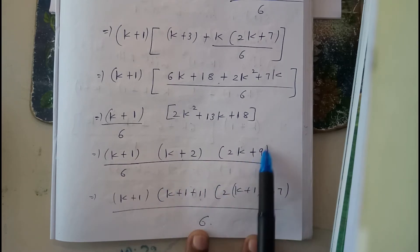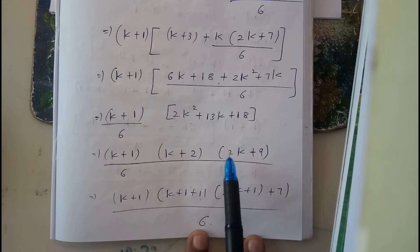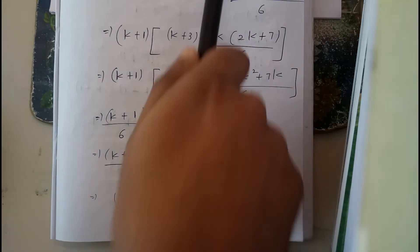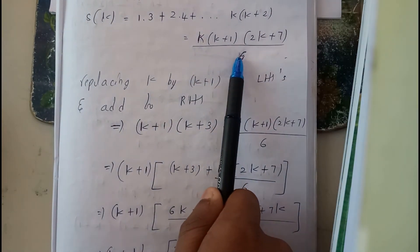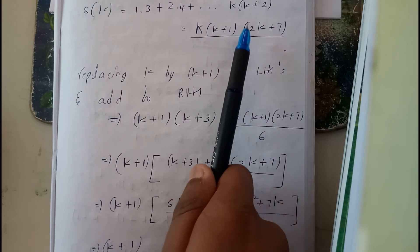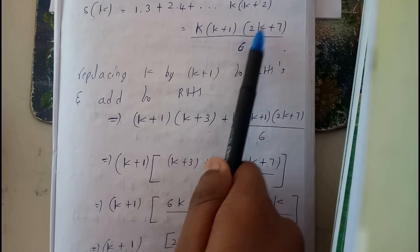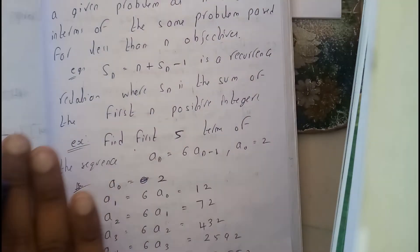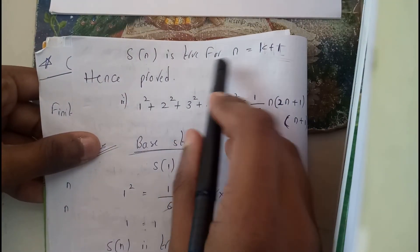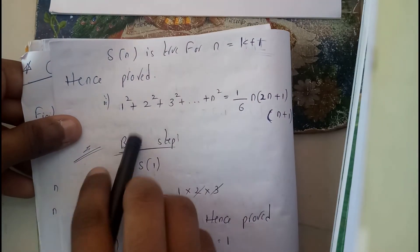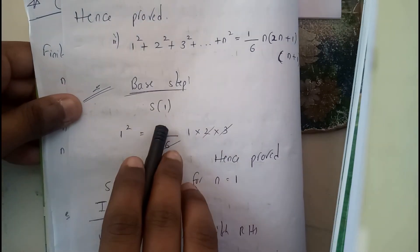Now k+2 can be written as (k+1)+1, and 2k+9 can be written as 2(k+1)+7. So the expression becomes (k+1)(k+1+1)(2(k+1)+7)/6, which matches the required form for n = k+1. These two equations are matching, hence this follows mathematical induction and S(n) is true for n = k+1. Hence proved.